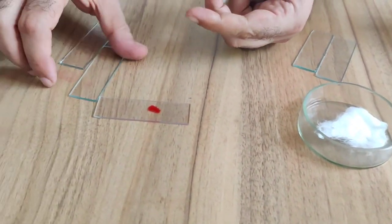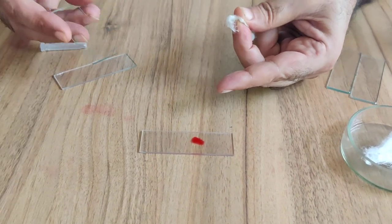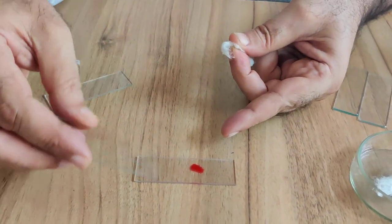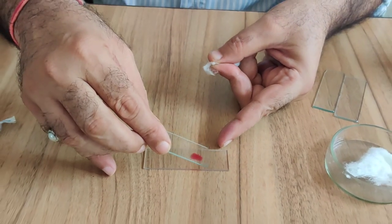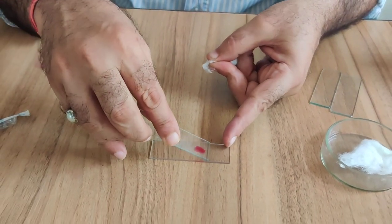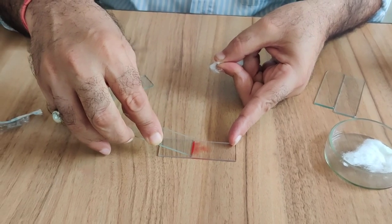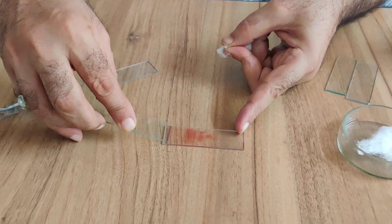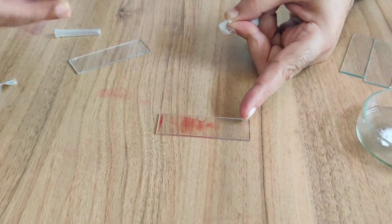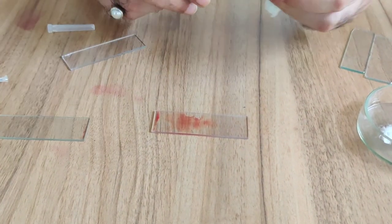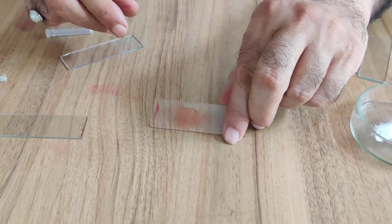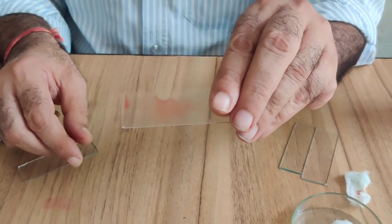Now this blood drop on the slide, take another slide, clean slide, and make a specific angle of 45 degrees and spread the blood film over the slide. In this way you will be able to get a thin layer of blood on a slide.